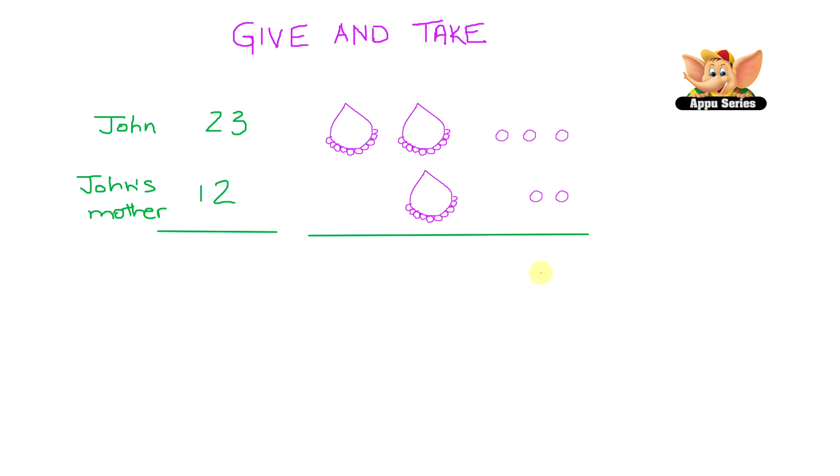Now to find the answer of how many pearls is John left with, let's first find out how many loose pearls are left with John. So we know that John had 3 loose pearls. And he gave away these 2 pearls to his mom. So he's left with 1 loose pearl. So let's draw that. So 3 minus 2 gives you 1. That's 1 loose pearl.